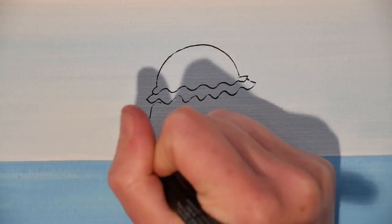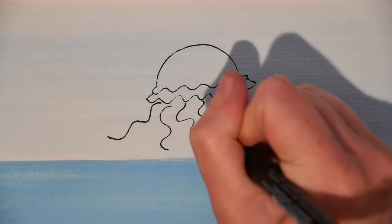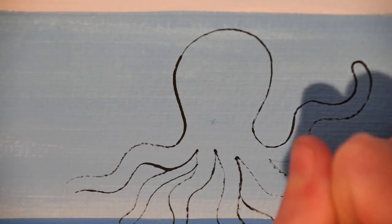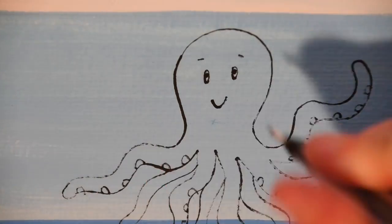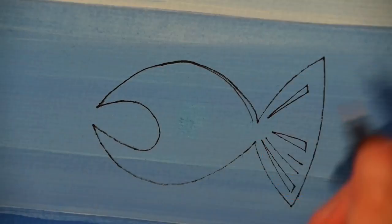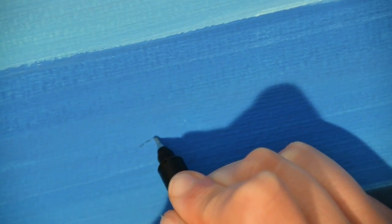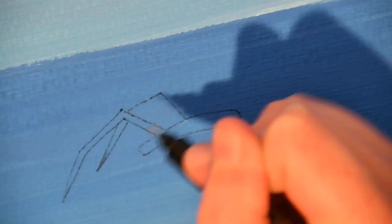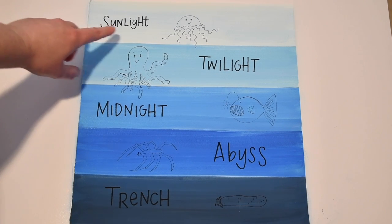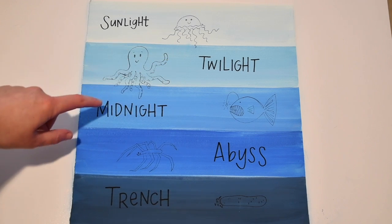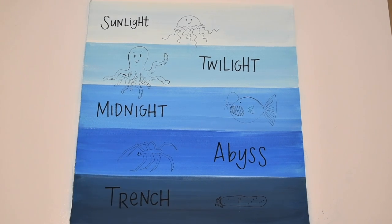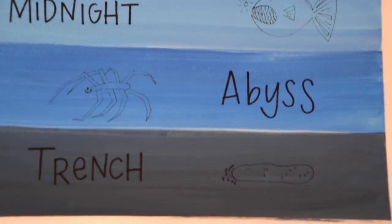When we're done adding our layers, we're going to add one sea creature to each layer that represents that zone. For the sunlight layer, I'm adding a jellyfish. For the twilight zone, I'll be making an octopus. For the midnight zone, we'll add the anglerfish. For the abyss, we'll draw the sea spider. Let's go over our zones one more time: sunlight, twilight, midnight zone, abyss, and lastly the trench. There's not much that can live in the trench zone, so we have a friendly sea cucumber hanging out at the bottom.